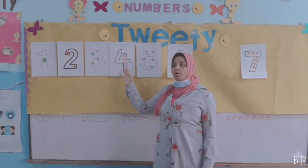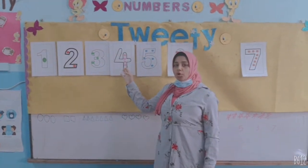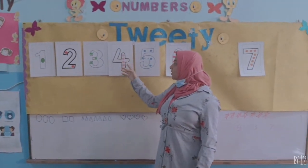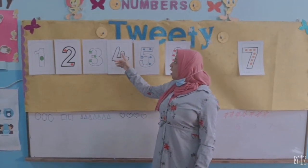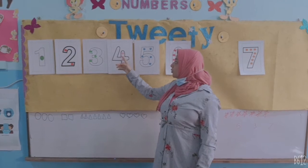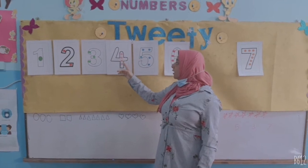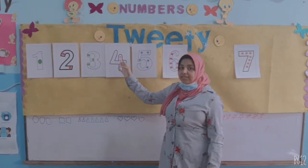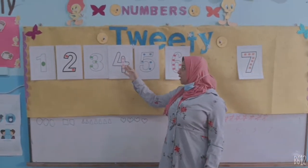What is number? 4. How many circles are there? 1, 2, 3, 4. What color is it? Pink.